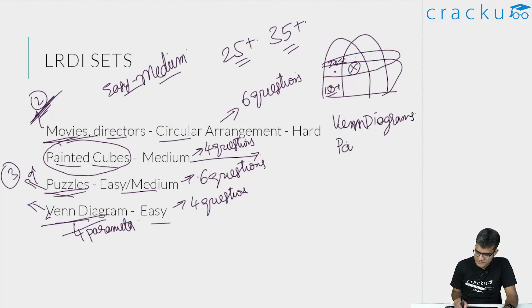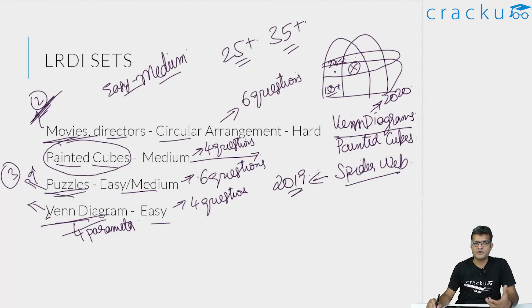The other is painted cubes. And there is one more which is spider web. Learn these important concepts because it doesn't take you a lot of time to learn them. But a question in LRDI can come from one of these topics. Venn diagrams have actually come I think in 2020. Spider web I think has come in 2019 or 2020. So these are important concepts and you should not miss out on any set which is easy just because you don't know the simple basics of it. So go through all of these concepts. They will help you quite a lot.